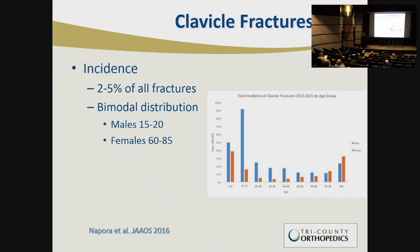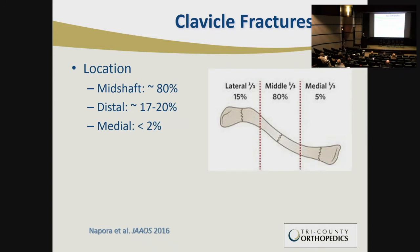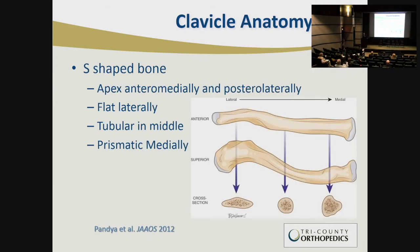Starting off with clavicle fractures, it's about two to five percent of all fractures that we see. It tends to have a bimodal distribution — more commonly in young males and elderly females. They tend to be in the mid shaft about 80% of the time, in the lateral or distal portion between 17 and 20% of the time, and medially pretty rare, between two and five percent.